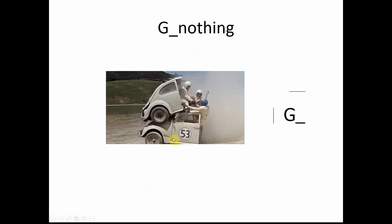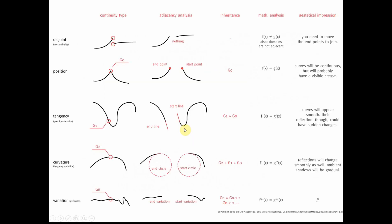So G0 continuity means they don't come together at all. Let's look at this from a mathematical perspective. G0 means they're disjointed. If you look at the mathematical function, let's say one curve is F of X and the other curve is G of X — they are not equal to each other at any particular point. The functions are not equal with each other.